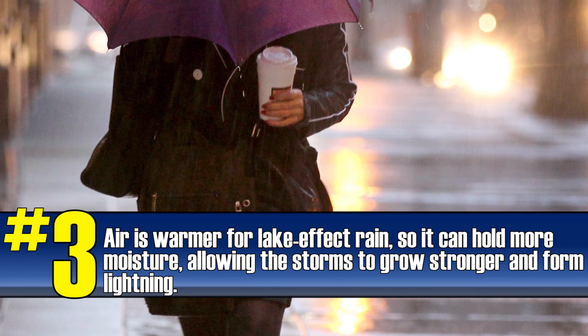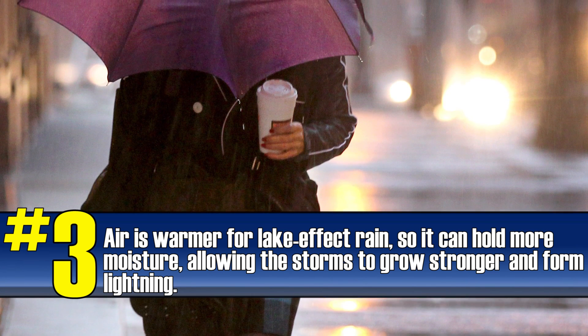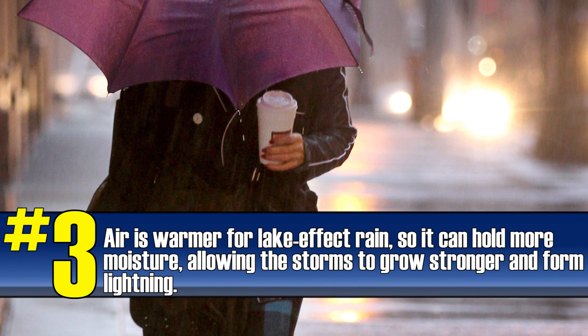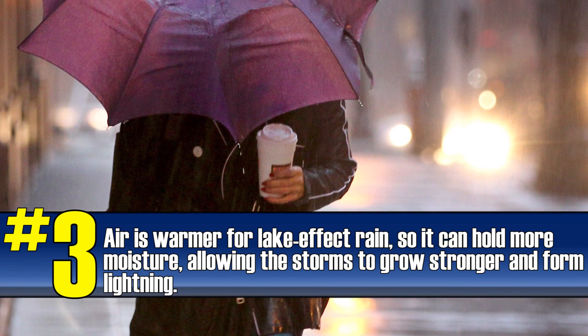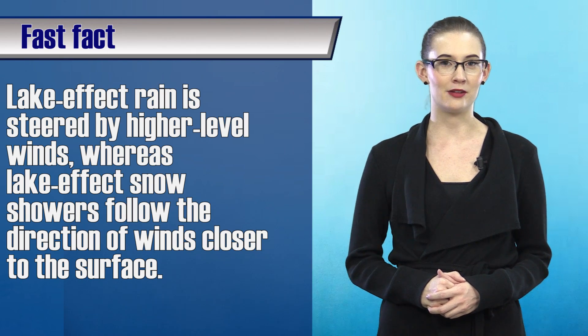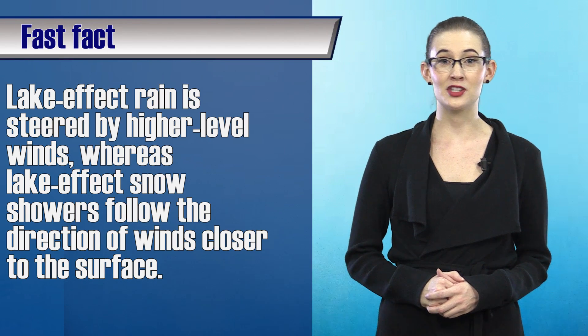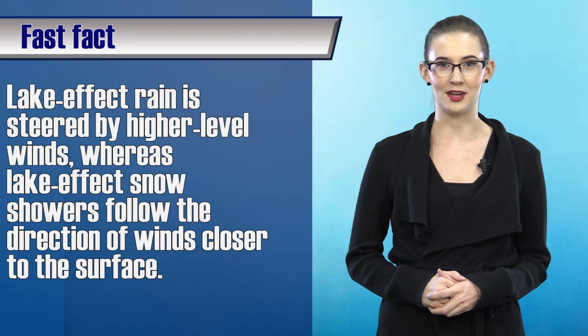Third, the warmer the air is, the more moisture it can hold. So in the winter with frigid air, the storms hold less of a punch. Higher relative humidity and air blowing over Lake Erie produces more widespread cloud cover in lake effect rain than in snow. Clouds are also deeper during rain events, meaning the steering of lake effect rains likely comes from a higher level.